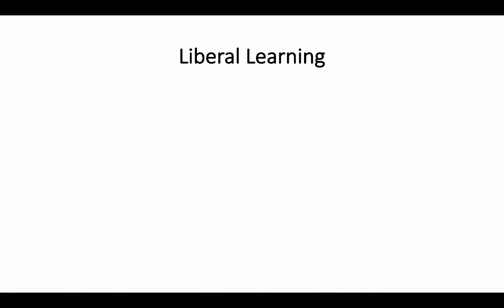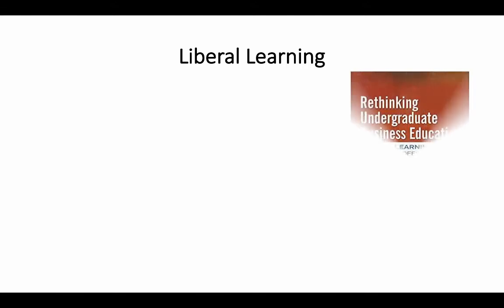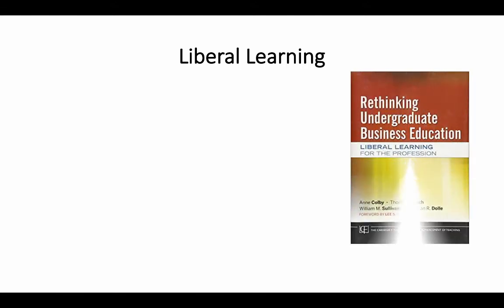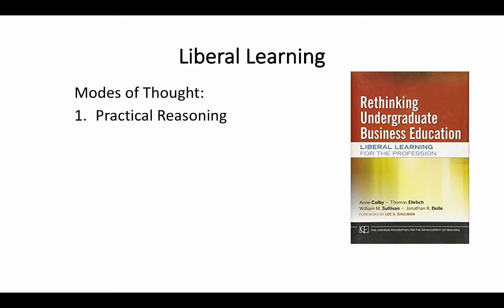To start, we need to get a handle on what liberal arts means. Liberal in this context isn't about politics—it's about a way of approaching learning. In the book Rethinking Undergraduate Business Education, the authors identify four modes of thought crucial to fostering an independent, critical-thinking individual. The first two modes are ones that business education programs are already quite good at: practical reasoning and analytical thinking.